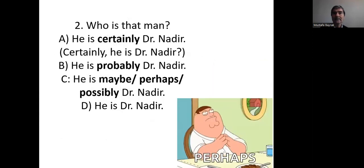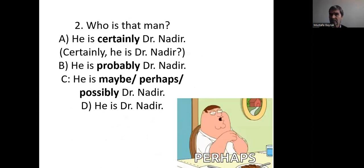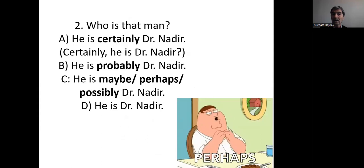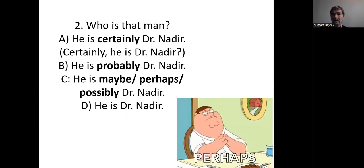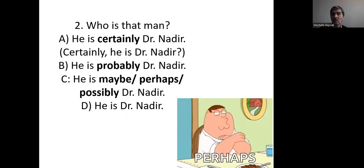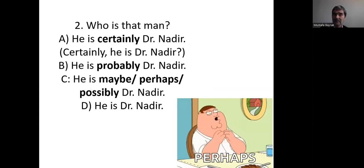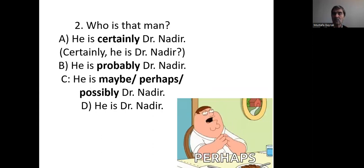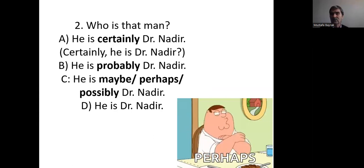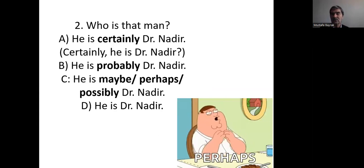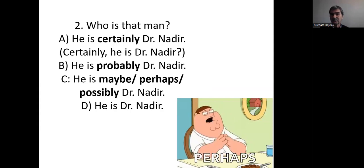Another example: 'Who is that man?' 'He is certainly Dr. Nadir' — or 'Certainly, he is Dr. Nadir.' With lower certainty: 'He's probably Dr. Nadir.' With possibility: 'He's maybe, or perhaps, or possibly Dr. Nadir.' But if we are 100% certain, we simply say: 'He is Dr. Nadir.'